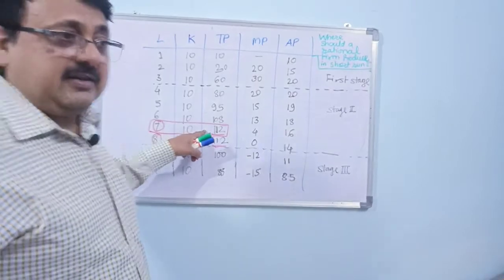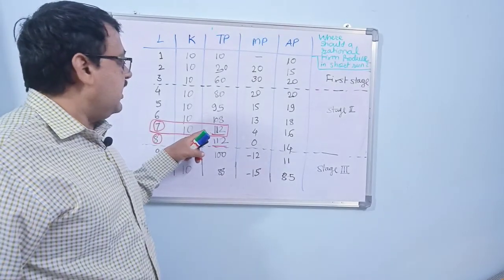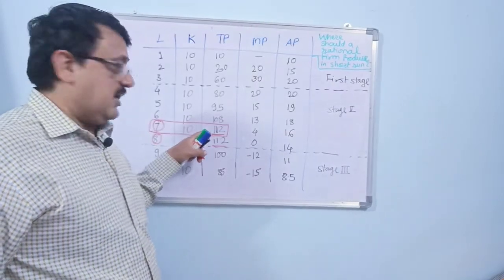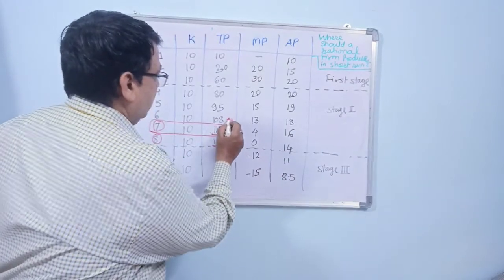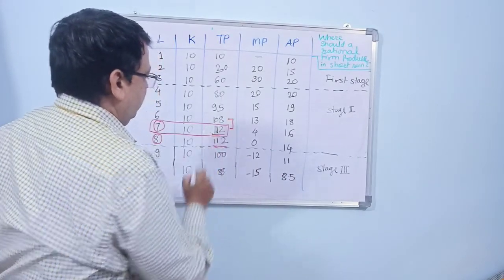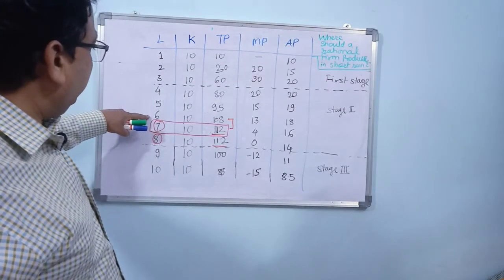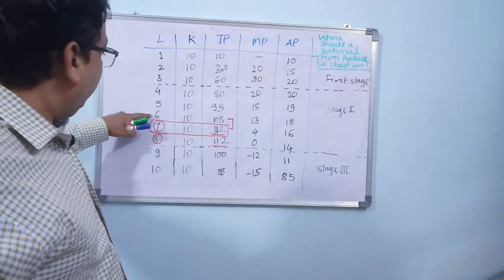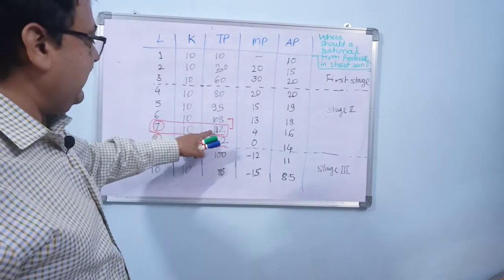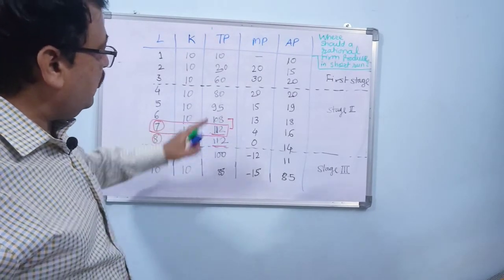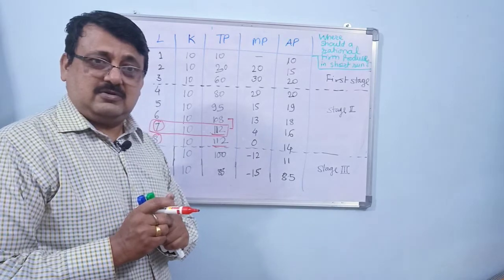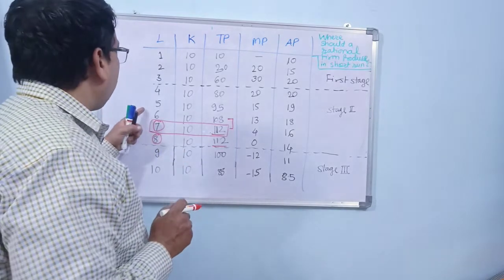That gives you maximum production 112. Again it depends on this difference. This difference is very small, 108 to 112, difference of only four. If the labor wage rate of one labor is higher than the profit of this four goods sold, then it is better to have six labor.